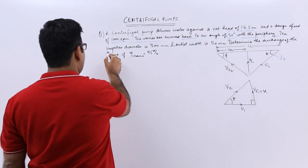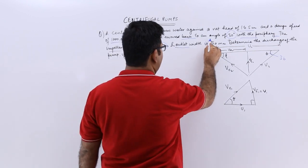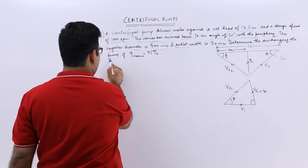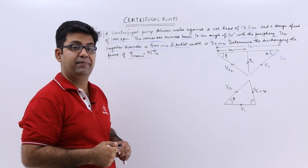The impeller diameter is 300 millimeters and the outlet width is 50 millimeters. Determine the discharge of the pump if the manometric efficiency is 95 percent.